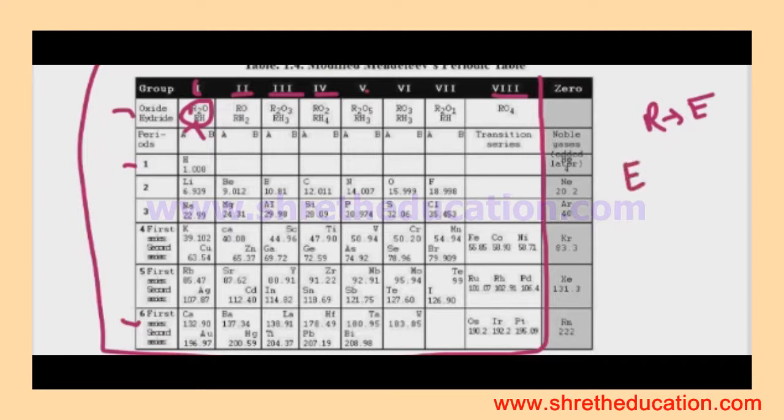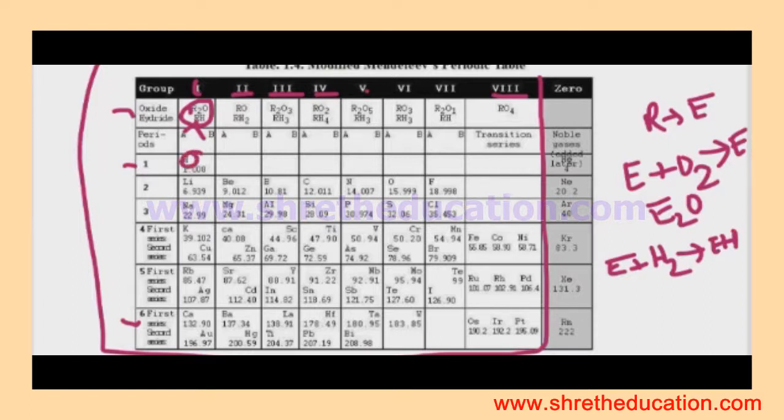In group one, elements react with oxygen and form E2O type compounds. They react with hydrogen and form EH type compounds. For example, water formation H2O. Ice is H2O form.